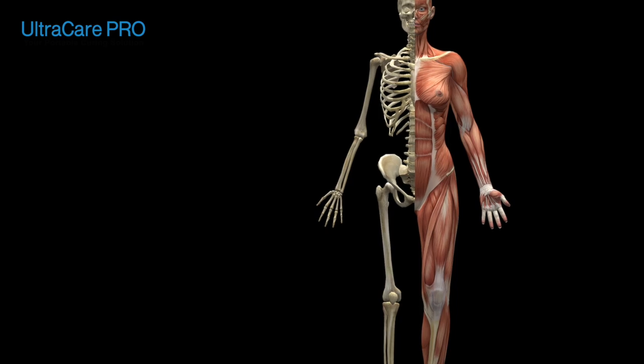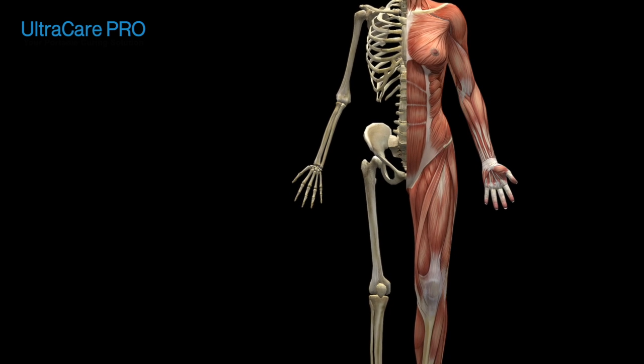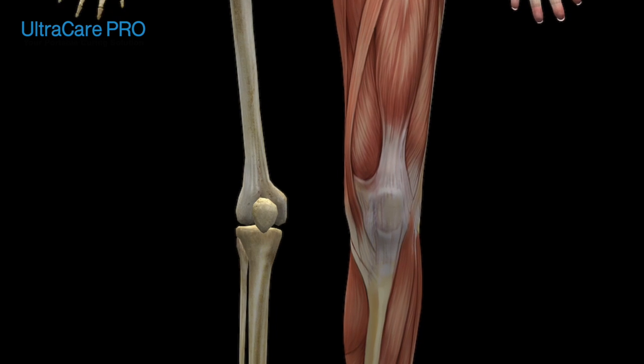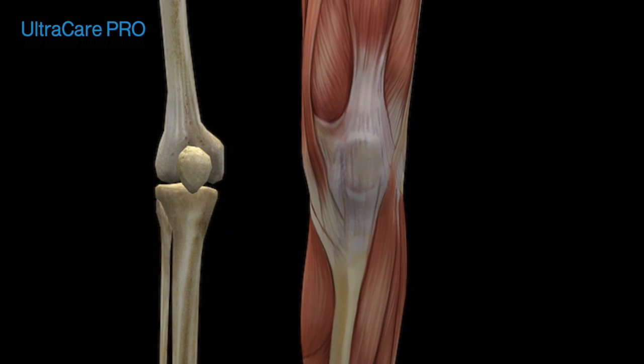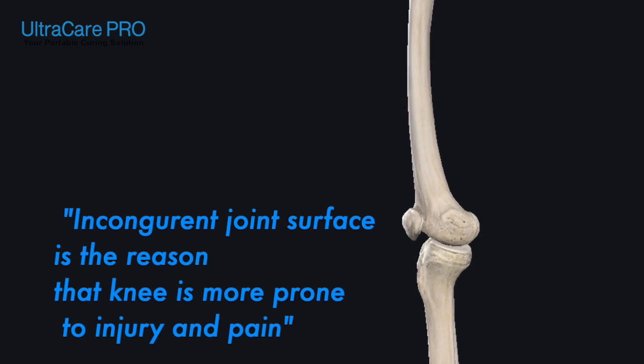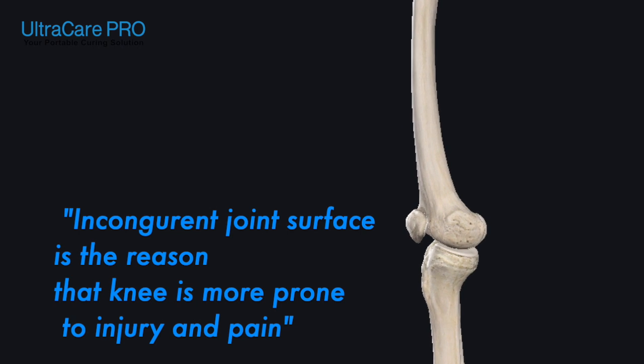The fact that all three bones have a different articular surface, or as you can say different ends, knee joint is an incongruent surface and that's the reason the surrounding structures like capsules, ligaments, meniscus, etc. are the supporting system for the joint for its stability. The function of knee joint is not only to provide mobility but also to provide stability, and the incongruent surfaces is the biggest reason why knee is more prone to develop injury and pain.